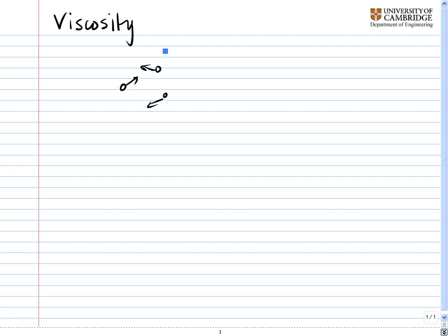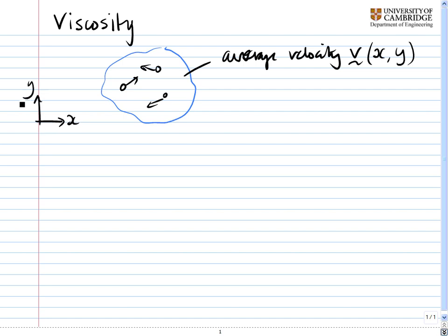What we've done in the past is say that if we take a clump of molecules that's big enough, we can get an average velocity. The average velocity would be defined at a point in space, v as a vector, as a function of x and y, if we're looking at a space involving x and y.